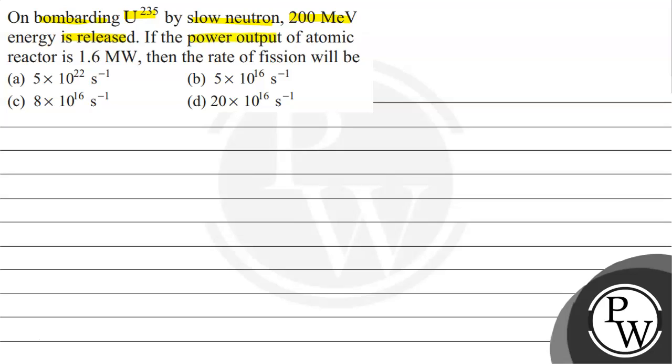If the power output of atomic reactor is 1.6 megawatt, then the rate of fission will be: option A, 5 × 10²² per second; option B, 5 × 10¹⁶ per second; option C, 8 × 10¹⁶ per second; and option D, 20 × 10¹⁶ per second.